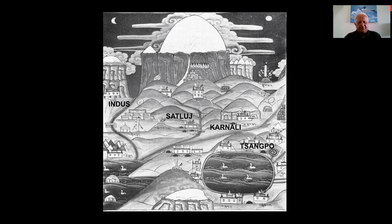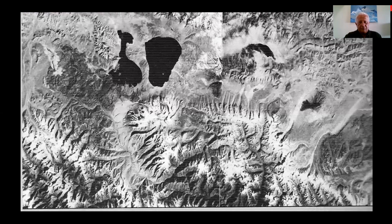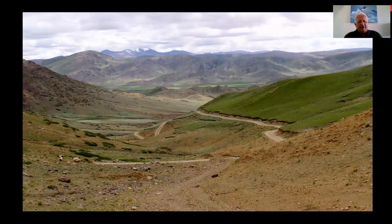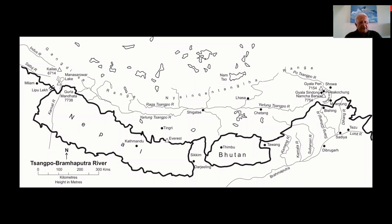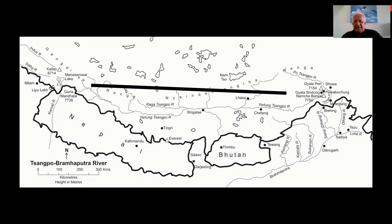The Sangpo originates from a small valley near the foot of Kailash and travels all across the Tibetan plateau into Assam. This map shows it coming from Kailash on the left and top, cutting across the entire Tibetan plateau, passing at the foot of Kailash Manasarovar, passing at the foot of Lhasa, until it reaches in the east Gyala Peri and Namcha Barwa.